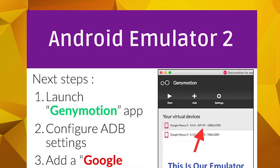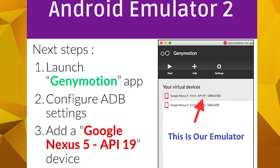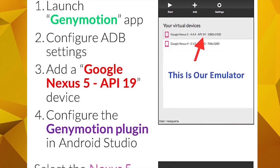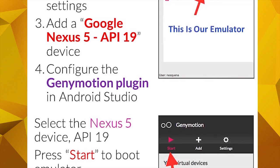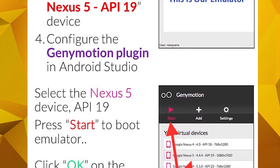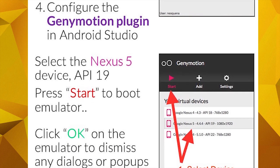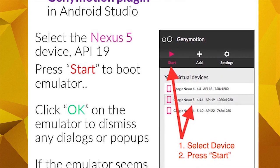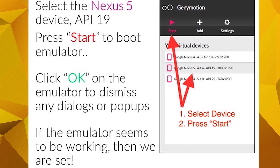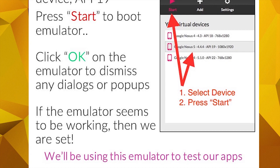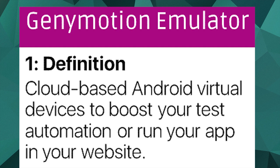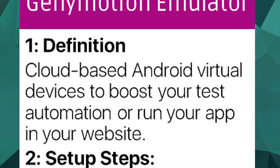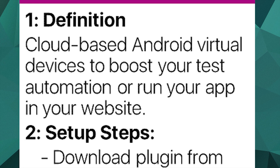First we will install the plugin for the emulator, then download the emulator, install Java JDK, and install the required VirtualBox program. We will see all these steps in this tutorial. Don't miss to subscribe and keep us going to make new tutorials. The definition of GeniMotion is a cloud-based Android virtual devices platform to boost your test automation or run your app in your website or another environment.